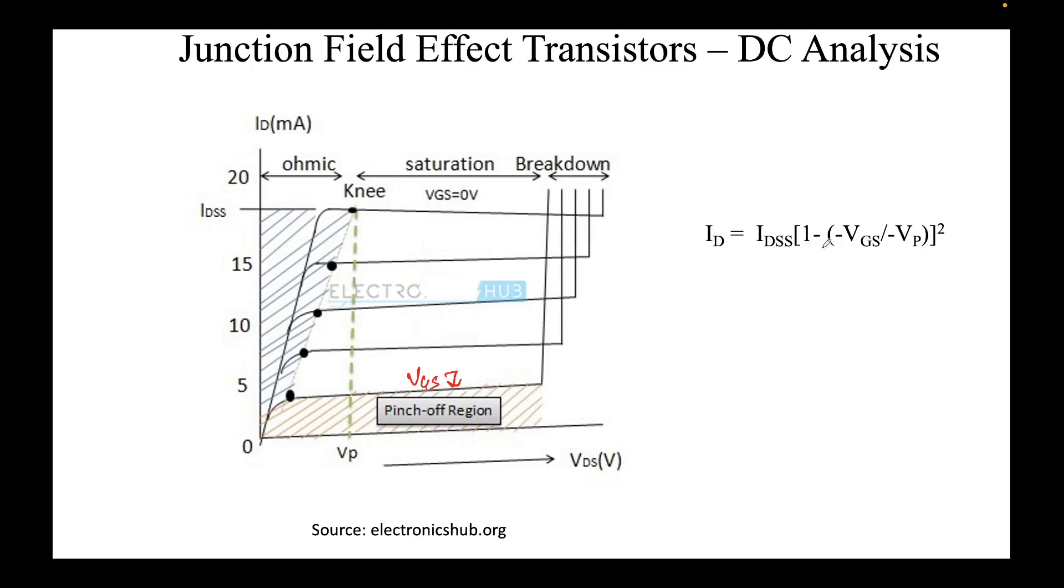ID is IDSS times 1 minus VGS over VP whole square. This is the formula which we use to arrive at the current in the saturation condition.